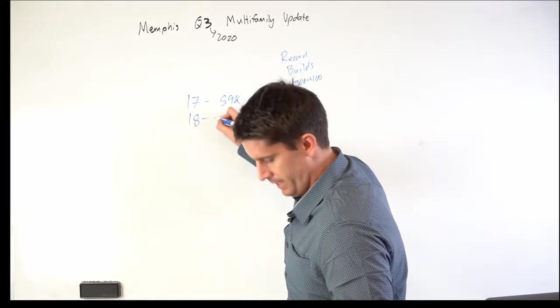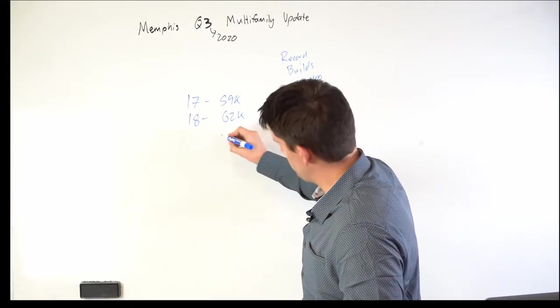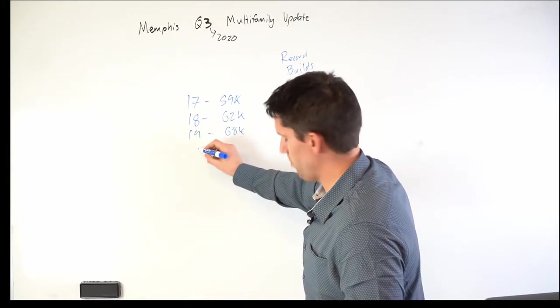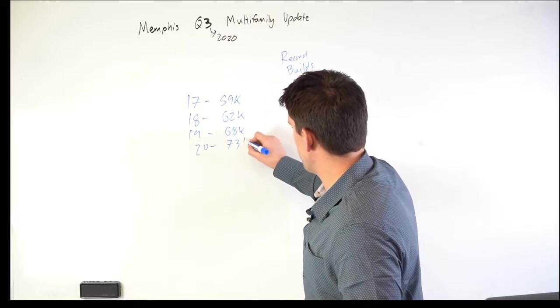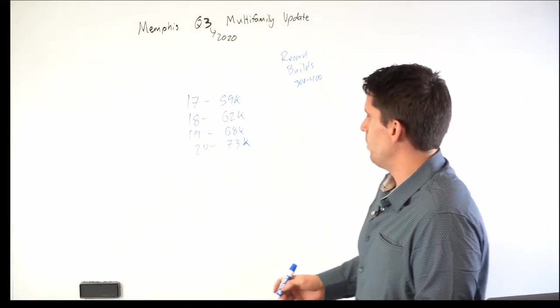In 2019, creeping around $68,000 average sale price per door. 2020, at least at the end of Q3, is around $73,000 per door. So some great appreciation happening over there.